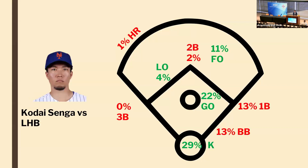Here's Rookie of the Year runner-up Kodai Senga. He allowed ground outs 22% of the time, home runs 1% of the time, and struck batters out 29% of the time.